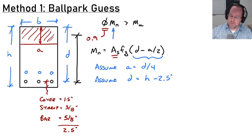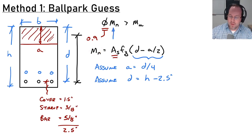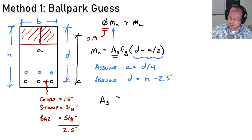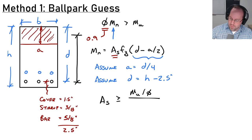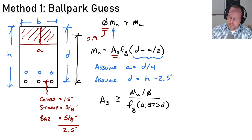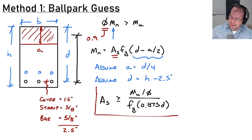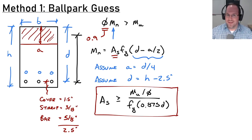Making those two assumptions and substituting into the expression for Mn and solving for area of steel, you find that As must be greater than Mu divided by φ, divided by fy, multiplied by 0.875d. This expression gives you a pretty decent estimate of how much steel you need in that beam.